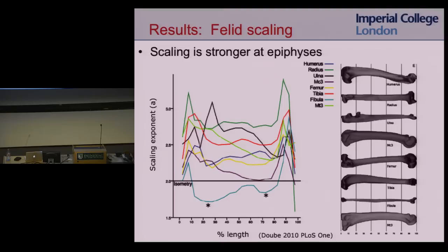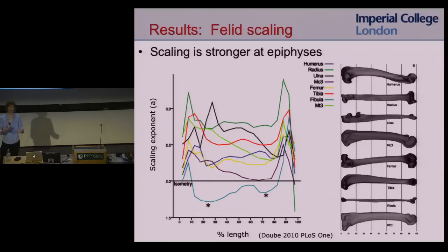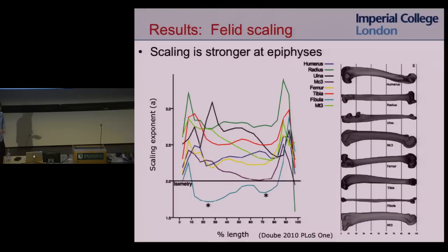At the ends of the bone — the epiphyses where your joints are — there's much higher scaling. That makes sense: the bigger the animal, the bigger the joint, which means a bigger surface area spreading out the joint force and decreasing stress. Also, a bigger joint gives a bigger lever arm for attached muscles, making them more efficient. So it makes sense that bigger animals have relatively bigger epiphyses at the ends of the bone.